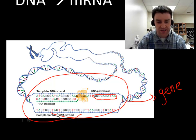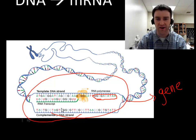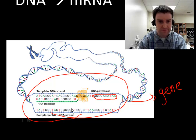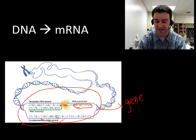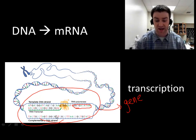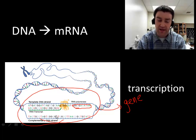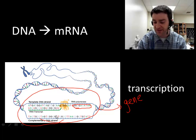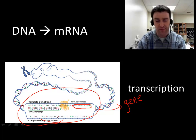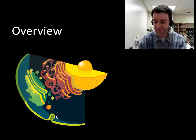That gene region will have its DNA code copied into a messenger RNA copy. Remember that RNAs have uracil instead of thymine. This process has a name: transcription. This is rewriting the DNA code into a messenger RNA copy, and that's really the first step. We'll talk more about how this really happens later.